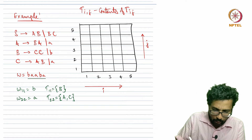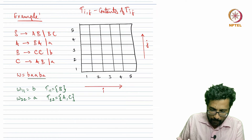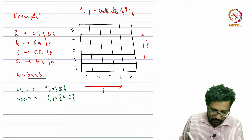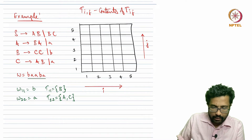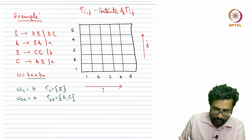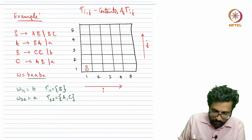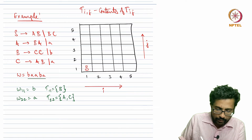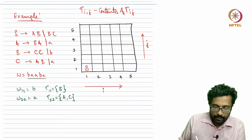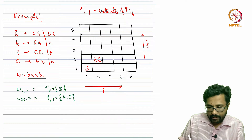The bottom-left cell corresponds to T[1,1], and w[1,1] is the symbol b. So T[1,1] contains just the variable B. And w[2,2] is the symbol a, which is derived from both variable A and variable C, so we write both A and C in cell T[2,2].